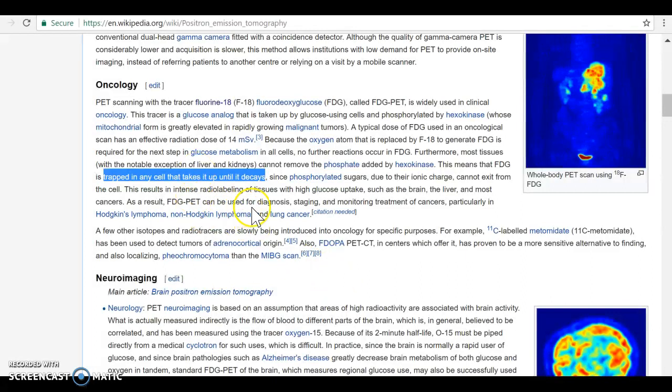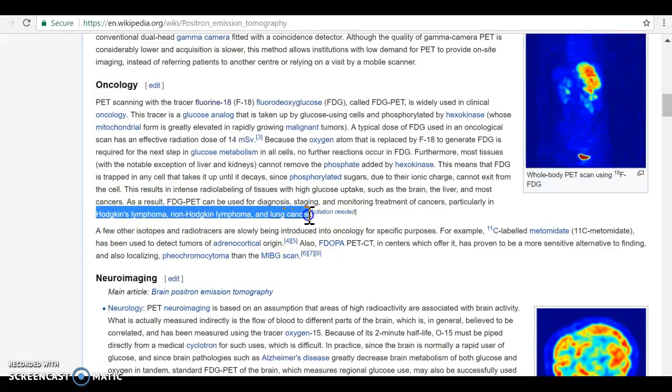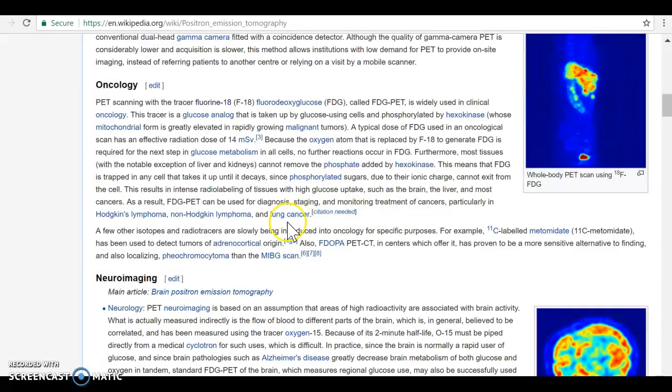We use this for diagnosing different types of cancers, and the most common types, according to this unsighted source, are Hodgkin's lymphoma, non-Hodgkin's lymphoma, and lung cancer. So it's really important. We use this in science, in medicine.